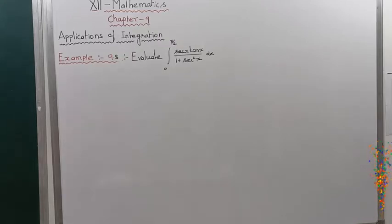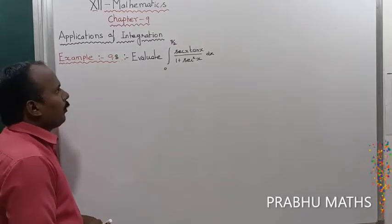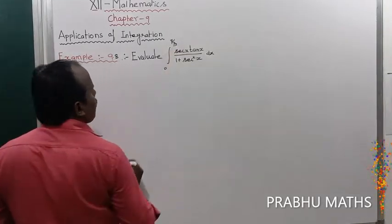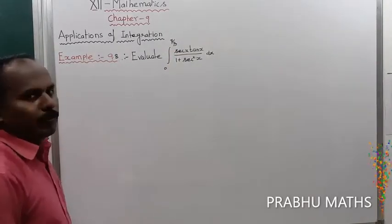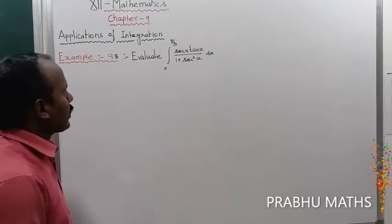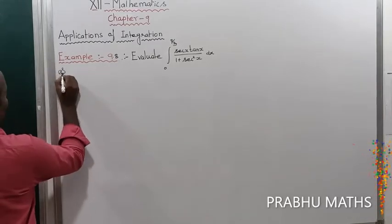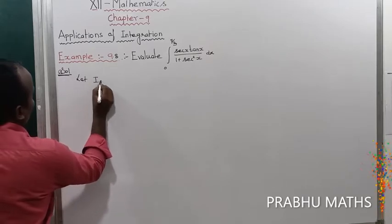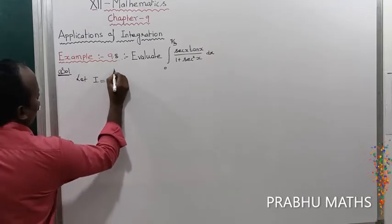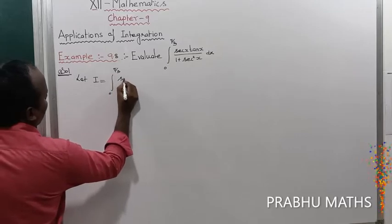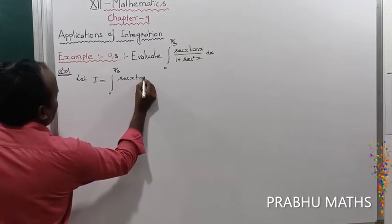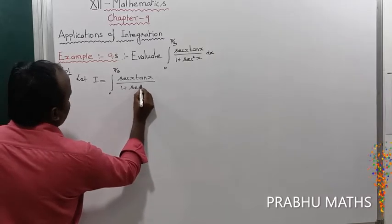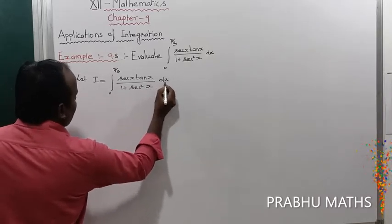Example 9.8: Evaluate the integral from 0 to π/3 of sec x tan x divided by 1 plus sec² x dx. Solution: we get I equal to integral of 0 to π/3 of sec x tan x, the whole divided by 1 plus sec² x, into dx.